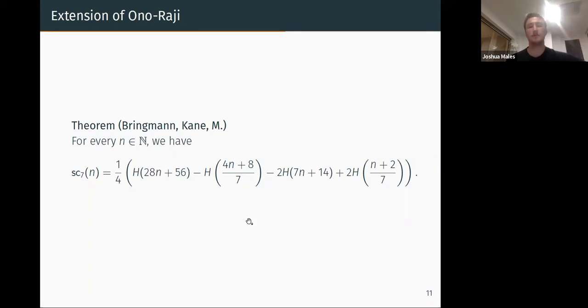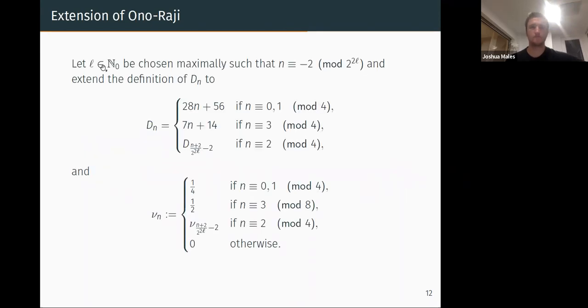So for that we need a little bit more notation. This looks horrible. So let l in n∪{0} be chosen maximally such that this congruence holds. But the idea is we define D_n in a similar way to Ono-Raji depending on n mod 4. If n is 2 mod 4, this l allows us to get back in from one of the previous cases, so we can just reduce. If n is 2 mod 4, the same thing—another number nu_n is a factor in front, either a quarter or a half. Again if n is 2 mod 4 we get to reduce back.